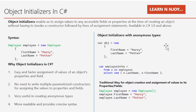We can also use object initializers with anonymous types. In this example, I created an object of an anonymous type that has two properties, first name and last name: var obj = new { FirstName = "Harry", LastName = "Potter" }. The only difference is I have not mentioned any type here — that's what makes it an anonymous type, compared to using a concrete type like new imply.